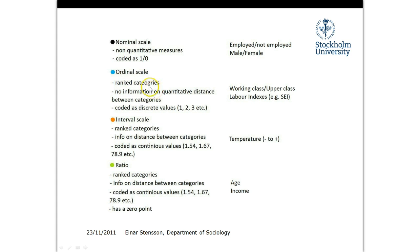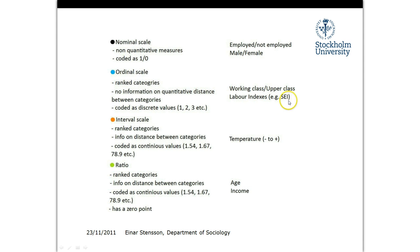On ordinal scale, you do have categories as in nominal scale, but this time you can rank them based on some kind of criteria. For example, working class and upper class — that's based on economics. Or labor indexes, which are classed on different subjective scales ranking different occupations in the labor market. In Sweden we have the SEI index, for example.